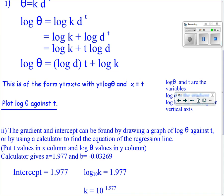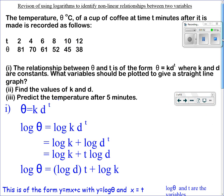In the x column you would put the values of t, and in the y column you'd put the values of log θ. So for the first one you would put the log of 81, then log 70, and so on.